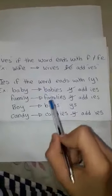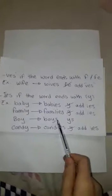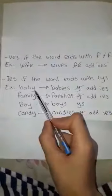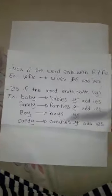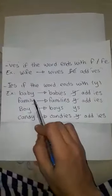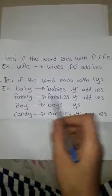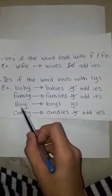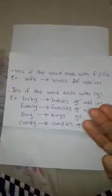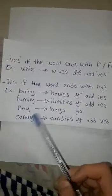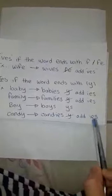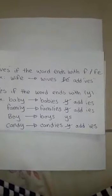Boy becomes boys. Let's explain why we didn't add -IES here. In 'baby' and 'family,' before the Y we have a consonant, so we remove the Y and add -IES. But in 'boy,' before the Y we have a vowel — the vowels are A, E, I, O, U — so we just add -S. Now, candy: before the Y we have a consonant, so we remove the Y and add -IES, making it 'candies.'